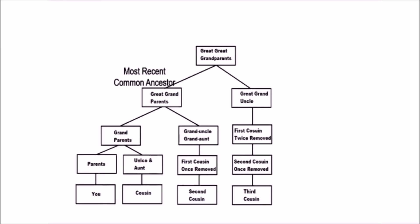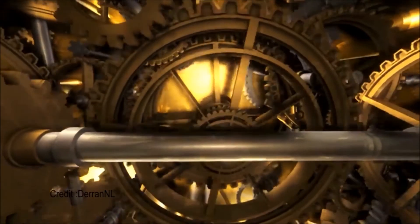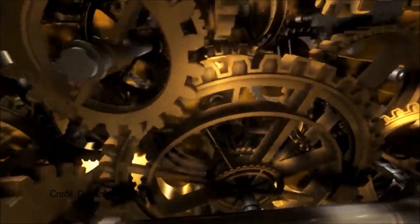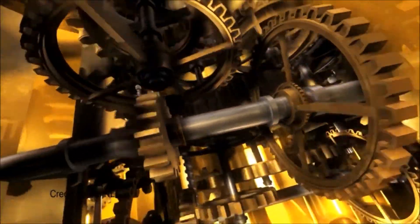We can expand this scenario to include your second cousins, third cousins, and so on. You can see that with the addition of every new branch, your common ancestor moves back a generation. So how far do we need to go back to find the most recent common ancestor of all human beings who are presently alive?